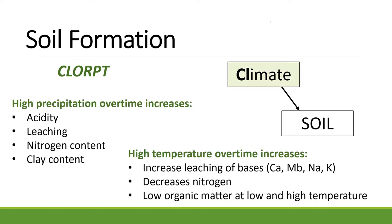Climate includes things like temperature and precipitation. Precipitation affects soil because it can change acidity and cause leaching, where nutrients or inorganic materials are washed down through the soil. It affects nutrient content — especially nitrogen — and clay content. Temperature can increase leaching especially of bases like calcium, molybdenum, sodium, and potassium, and it can decrease the formation of nitrogen in the soil and also affects organic matter. The take-home message is that both temperature and precipitation can change the organic and inorganic nature of soils.